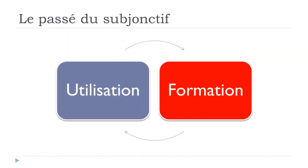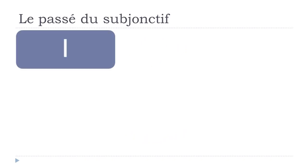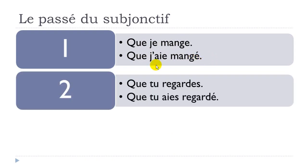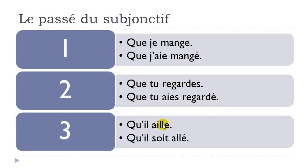Now let's see how to make the passé du subjonctif. Compare: 'que je mange' (subjonctif présent) versus 'que j'ai mangé' (passé du subjonctif). Second example: 'que tu regardes' (subjonctif présent). Third: 'qu'il aille' (subjonctif présent of aller) versus 'qu'il soit allé' (subjonctif passé). You can spot that in the passé forms, we have avoir or être at the subjonctif présent, followed by the participe passé.